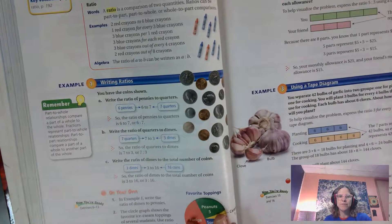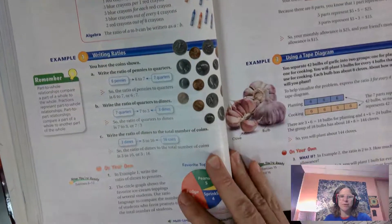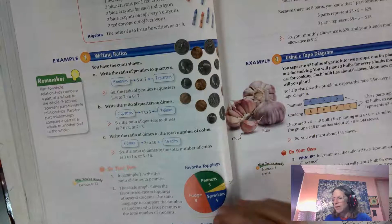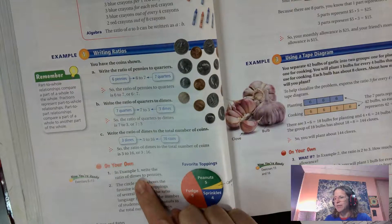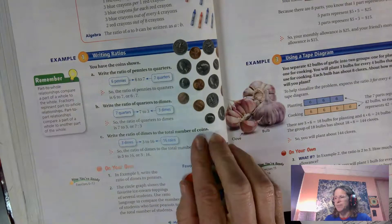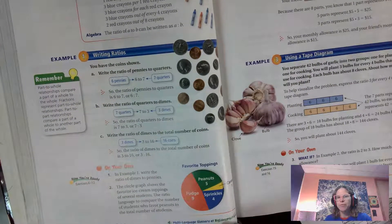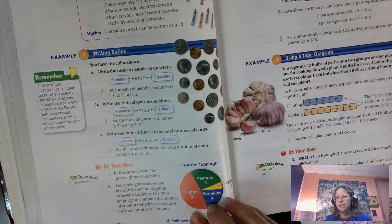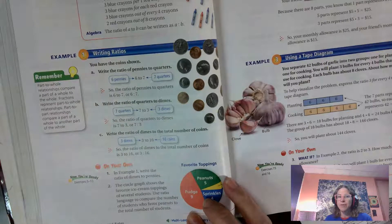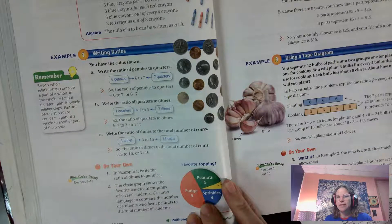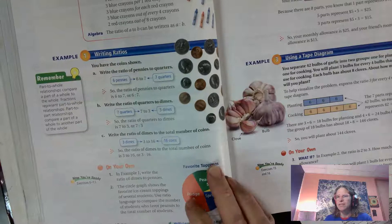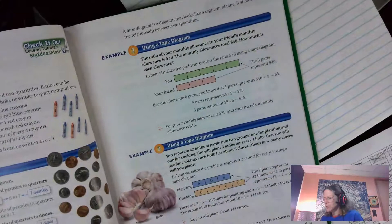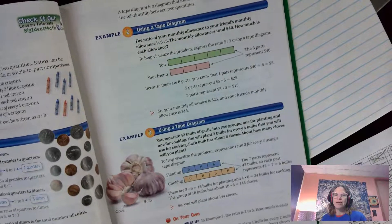This was about as far as we got yesterday in class where we went through the on your own examples one and two. And again we had to compare. In example one it was dimes to pennies so it's a part to a part, and here it was a part to a whole. So ratios can compare parts to parts or they can compare parts to wholes. And that's just something that you need to make sure that you look out for. I want to go over example number two and example number three and then the on your own.